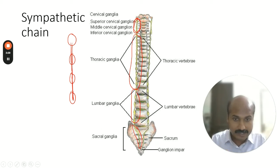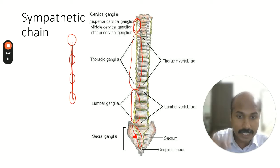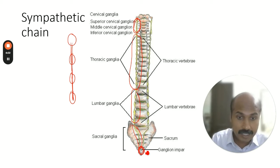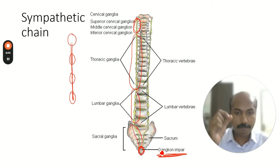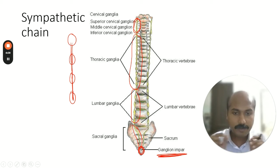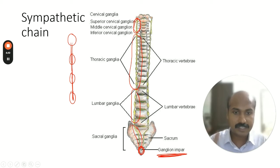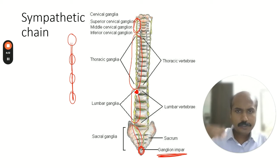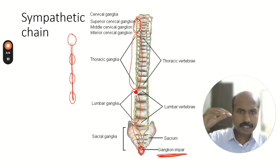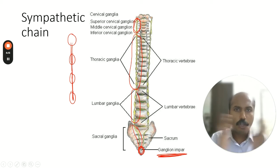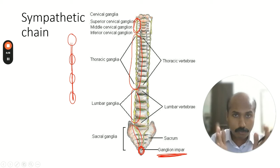Both sides are arranged like a chain, and both sides meet in the center at the lowermost part, called the ganglion impar. The ganglion impar is the lowermost sacral ganglion — a fusion of both sides.